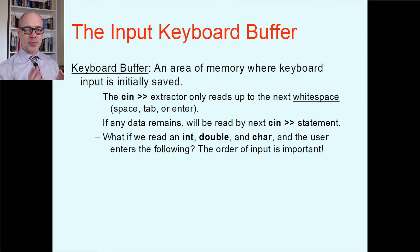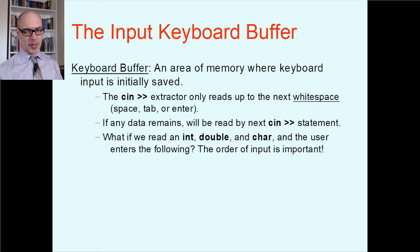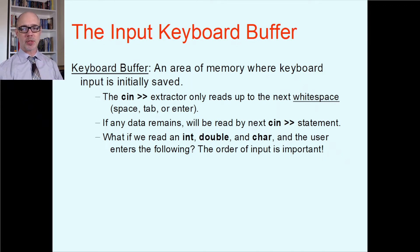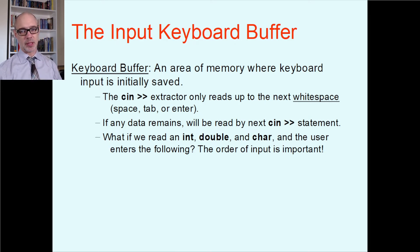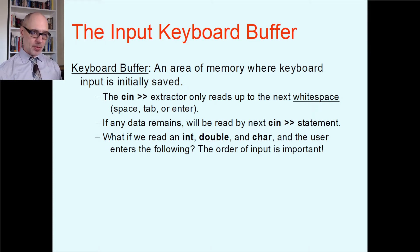Keep in mind that the cin right-arrow extractor — that double right angle bracket operator — is called the extractor when used for this purpose. It takes information out of the keyboard buffer, and it only reads up to the next whitespace. When we say whitespace, it could be a space, a tab, or an enter — something that produces a space that's not actually visible on screen. It only reads up to the very next whitespace, and then that particular extraction statement stops.